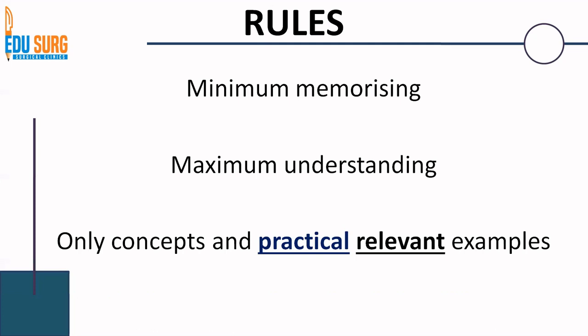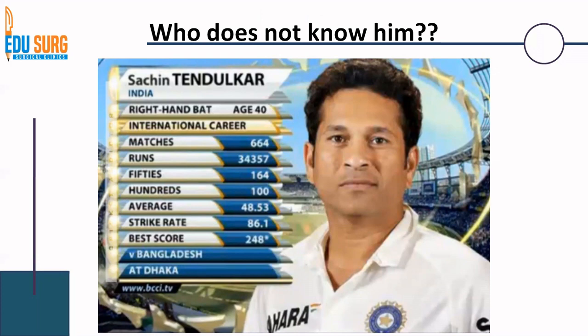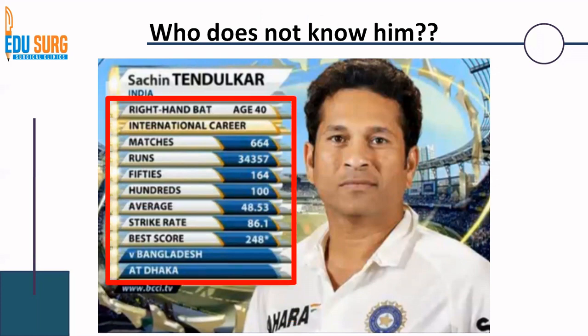In our first example, we are taking a figure from routine life. Most of you may know Sachin Tendulkar, one of the greatest players of our time. There is a red box on screen — I am not here to teach cricket, I am here to teach this box. This box is basically statistics. Those who are interested in cricket know these statistical values, and it is these values which make Sachin the greatest player he is. When we discuss him as a player, these numbers are basically his statistics.